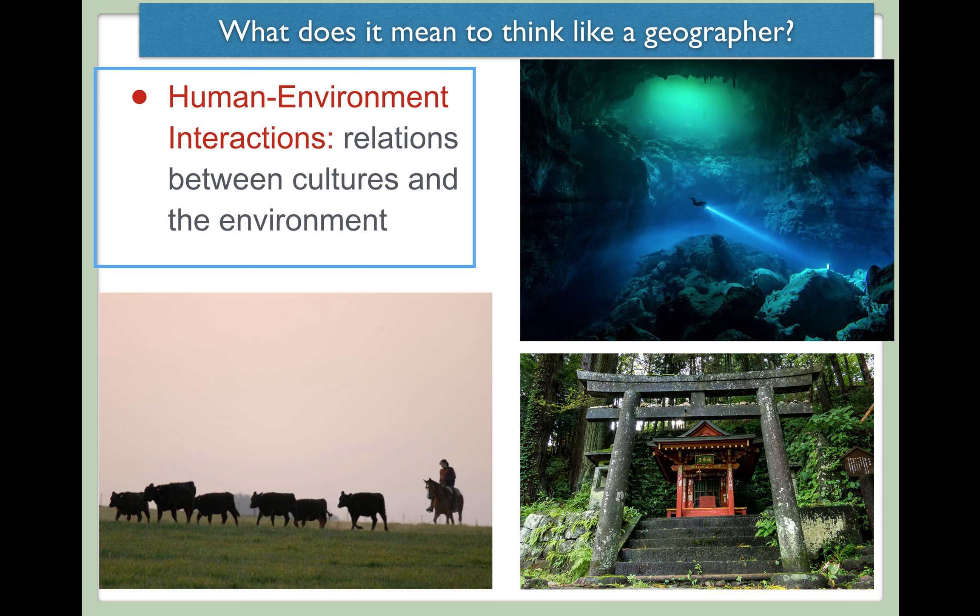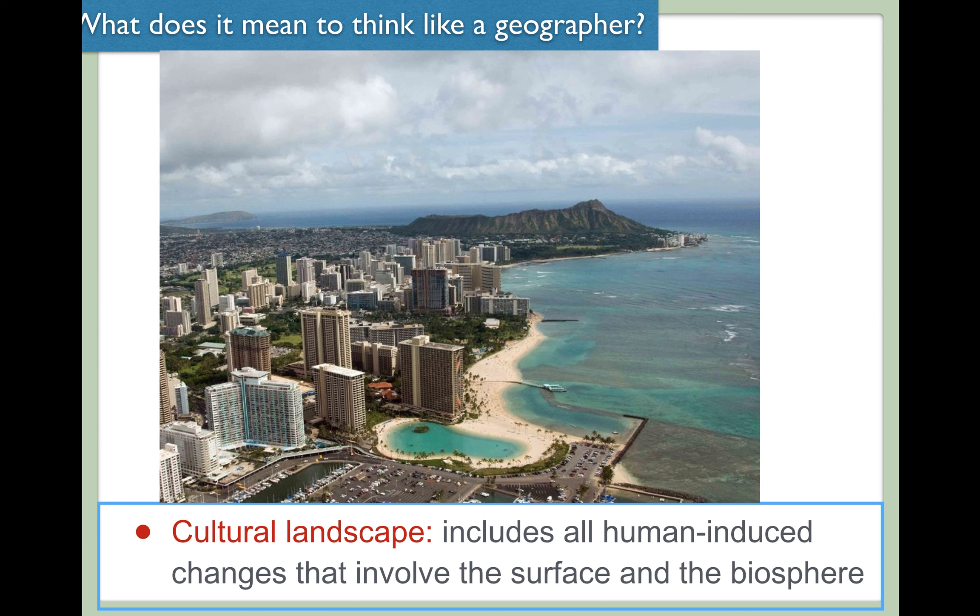Modify means to change, and adapt means that the humans themselves are changing something about their behavior as a response to the natural environment around them. The pictures here show cenotes down in Mexico with people exploring them, the environment influencing agricultural practices of people and how they feed themselves, and a Shinto shrine — Shinto being a Japanese ethnic faith which is highly influenced by the natural environment. So many different ways in which human beings interact with the environment and vice versa.